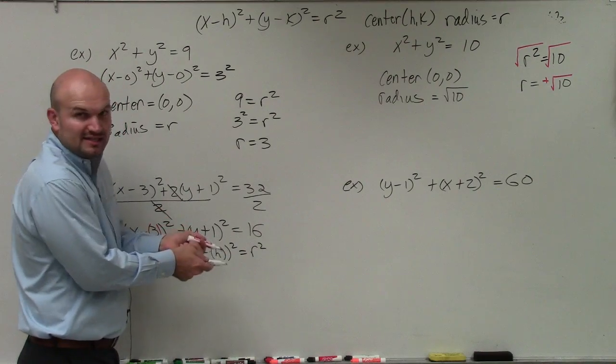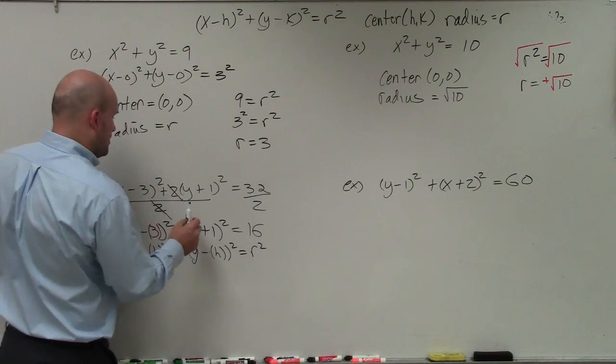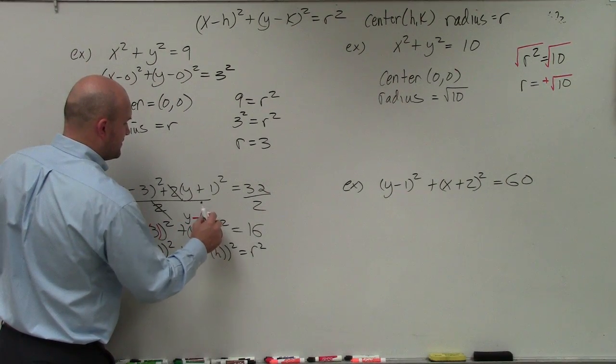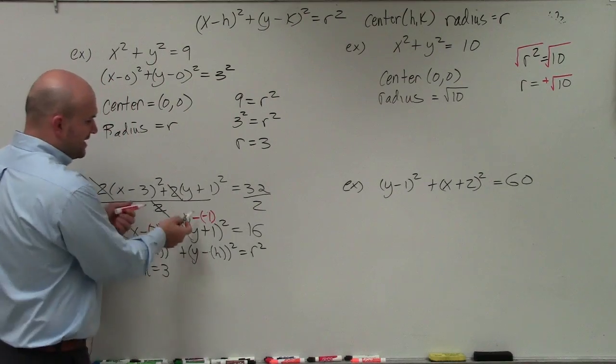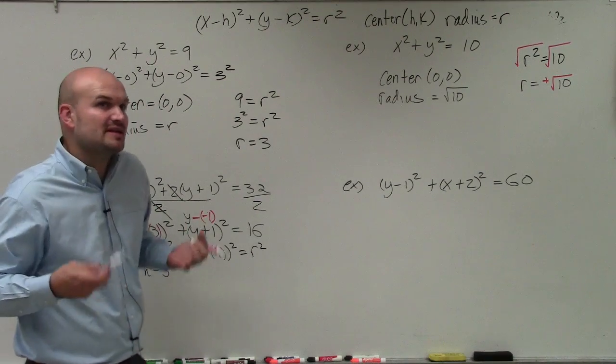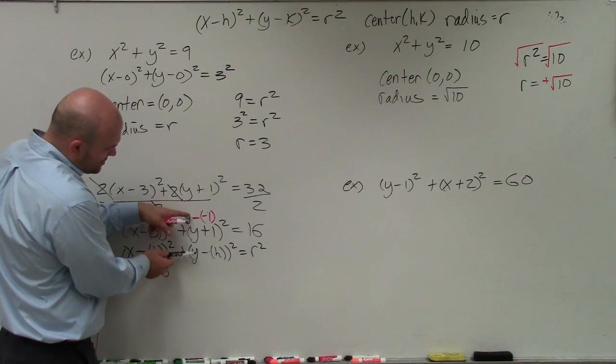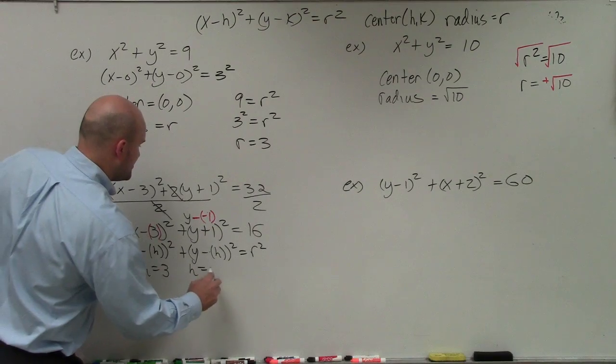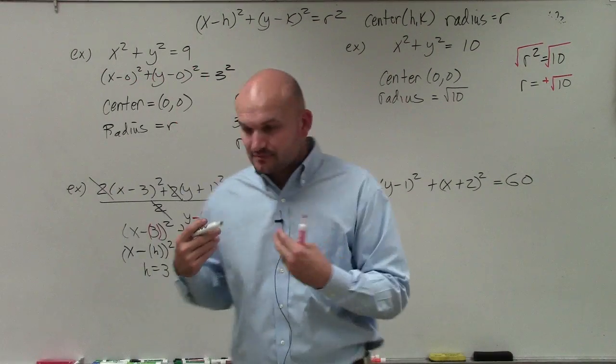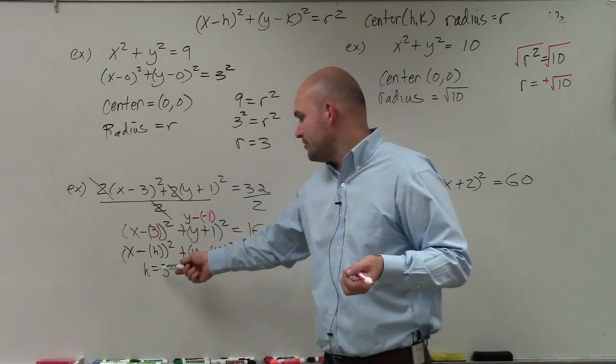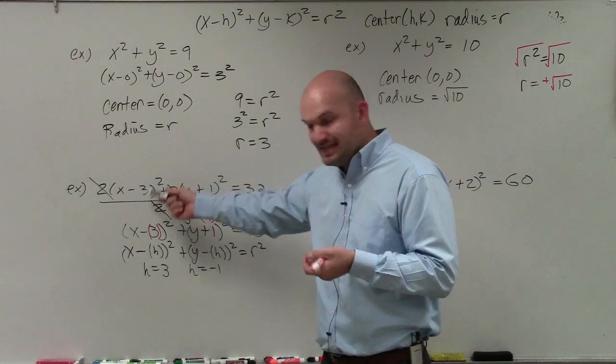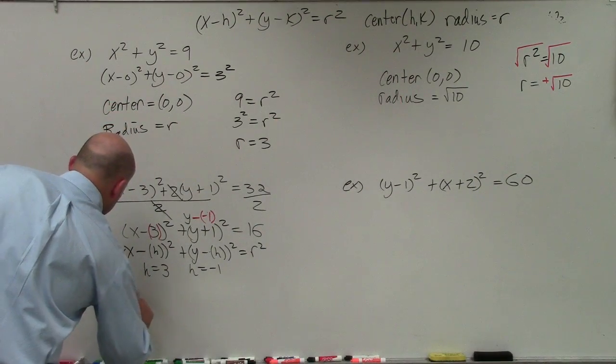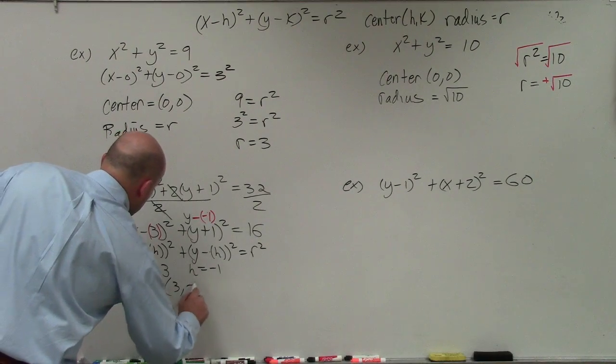How do you rewrite an addition problem as a subtraction problem? I can write this as y minus a negative 1. Because y minus a negative 1 is the same thing as y plus 1. But now look: it's y minus h, so h is equal to negative 1. So my center is going to be 3 comma negative 1, not negative 3 positive 1, which is a big mistake a lot of students make.